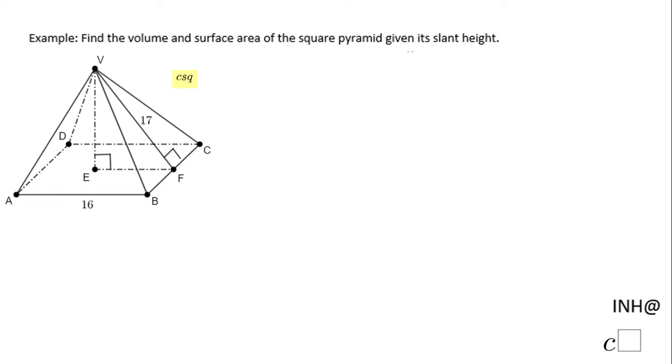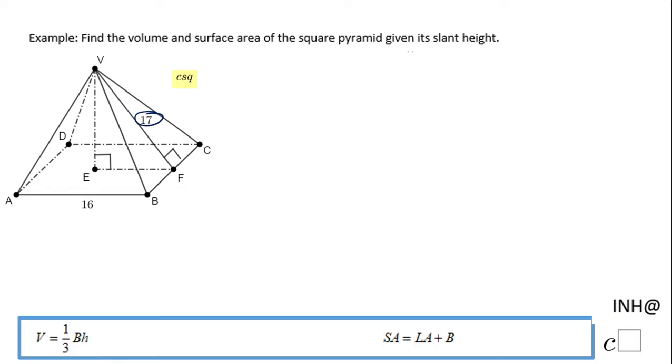Welcome or welcome back to I Need Help at C Square. In this example, we need to find the volume and surface area of the square pyramid. The base is a square, and we're given its slant height. The slant height is 17—this is the height of the triangle VBC.